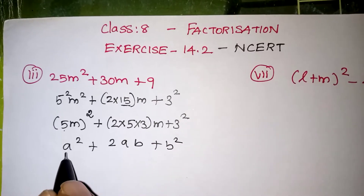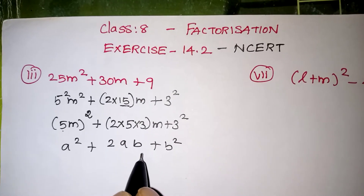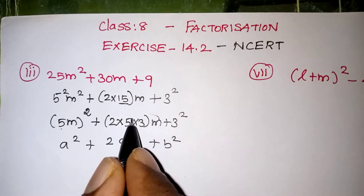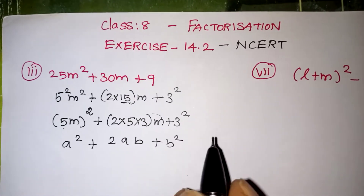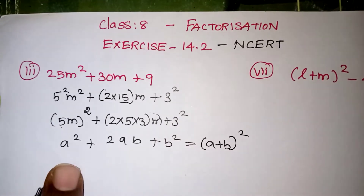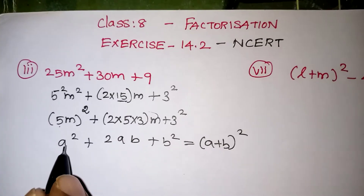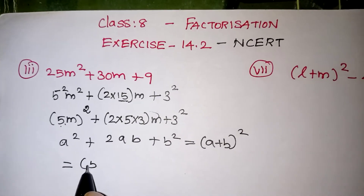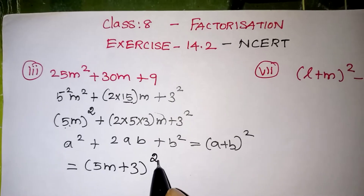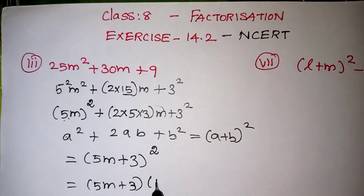The first term is a squared and the last term is b squared, with 2ab in between. Here a value is 5m and b value is 3. This is the formula of a plus b the whole squared. So in the place of a we have 5m, and in the place of b we have 3. Final answer: 5m plus 3 the whole squared, which means (5m + 3)(5m + 3).